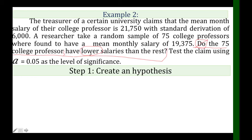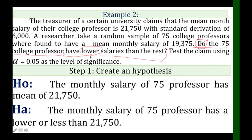The keyword 'lower' indicates this is an alternative hypothesis. So the Ha is: 'The 75 college professors have lower salaries than the rest,' or equivalently, 'The monthly salary of the 75 professors has a mean less than 21,750.' The Ho is: 'The 75 college professors have equal salaries,' or 'The monthly salary of the 75 professors has a mean of 21,750.'